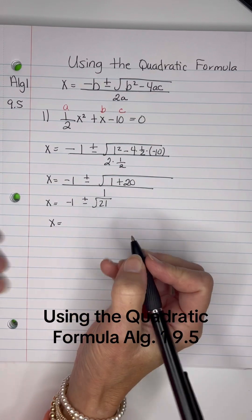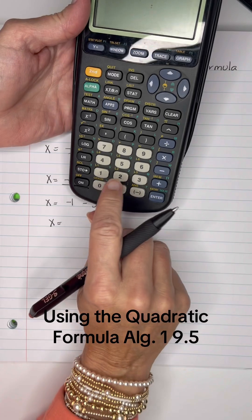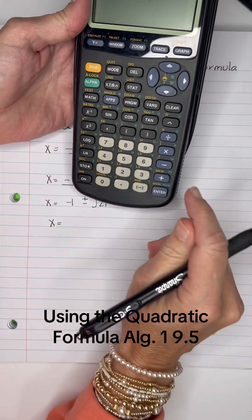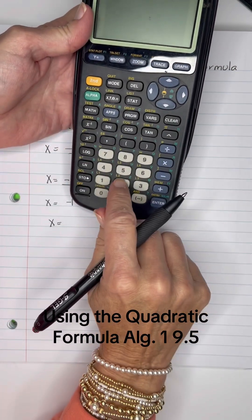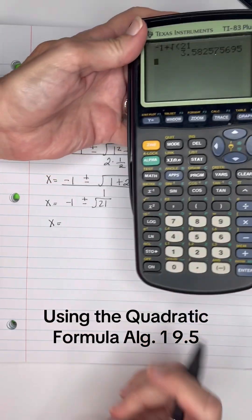So let's put this in a calculator. We have negative 1 plus the square root of 21, 3.58 approximately.